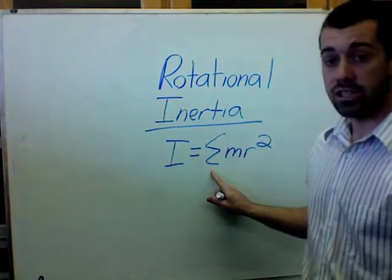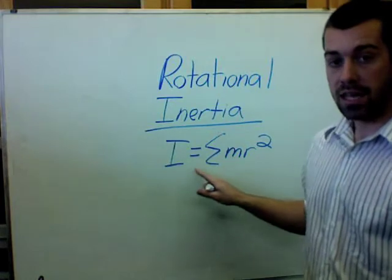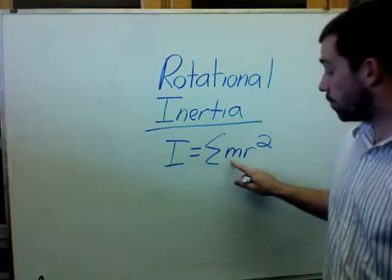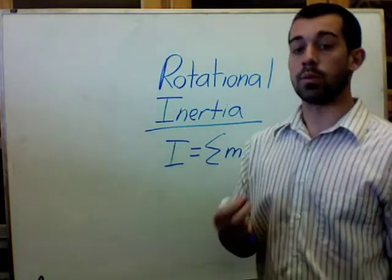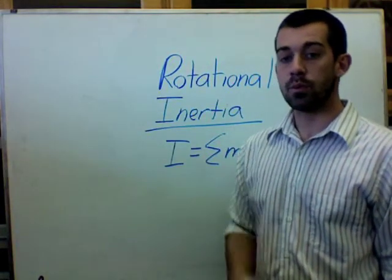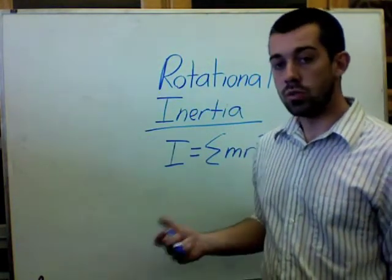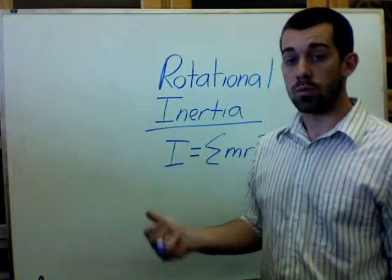So this is the equation for rotational inertia: I is equal to the sum of mass times the radius squared. And I'm going to show you two simple examples of how to use this equation to calculate rotational inertia.